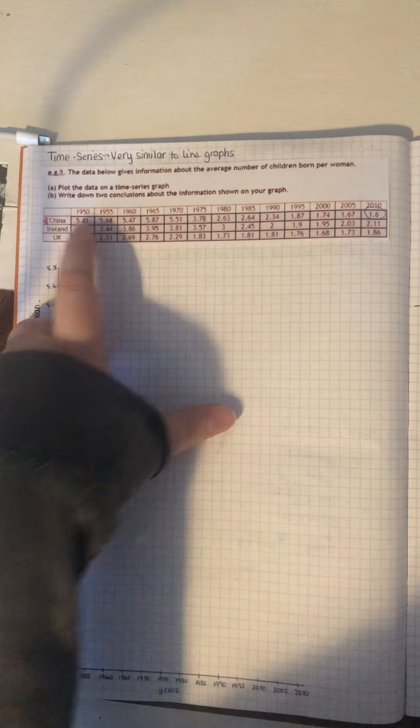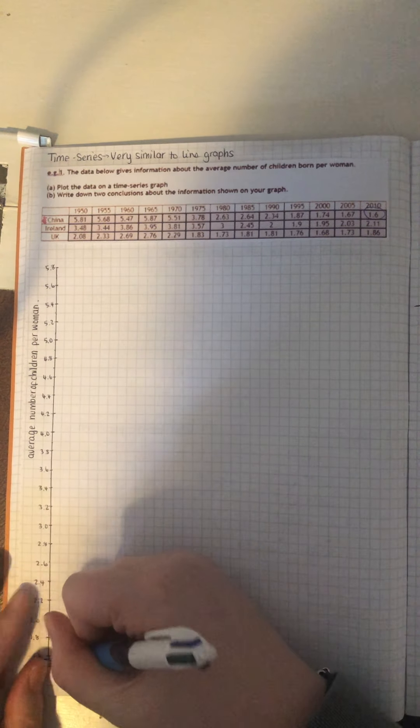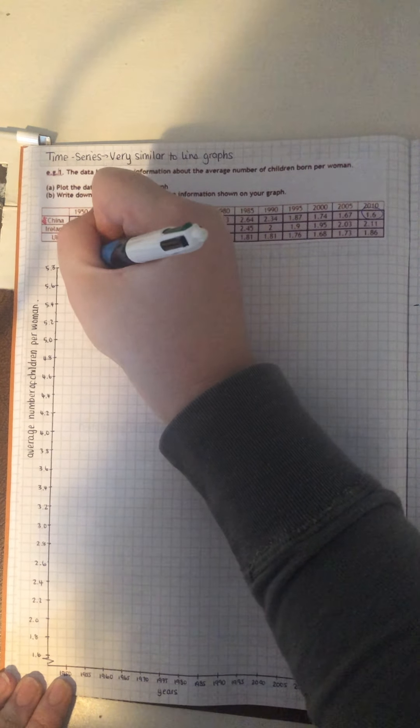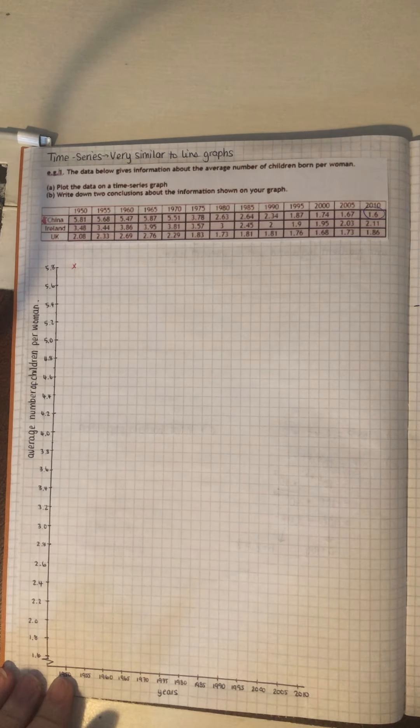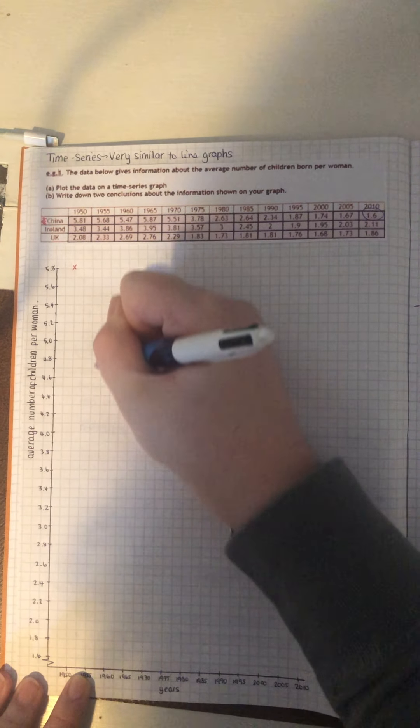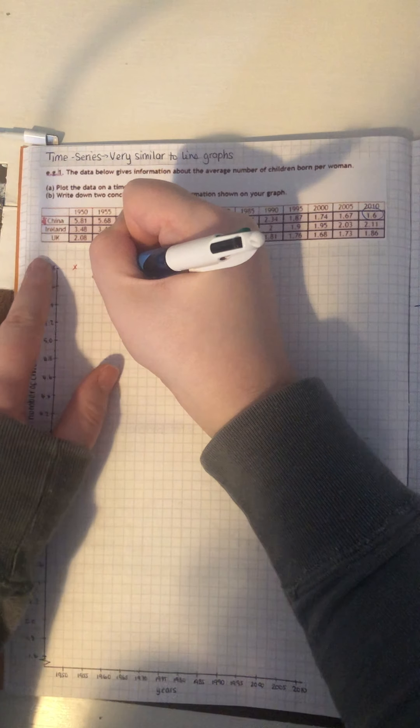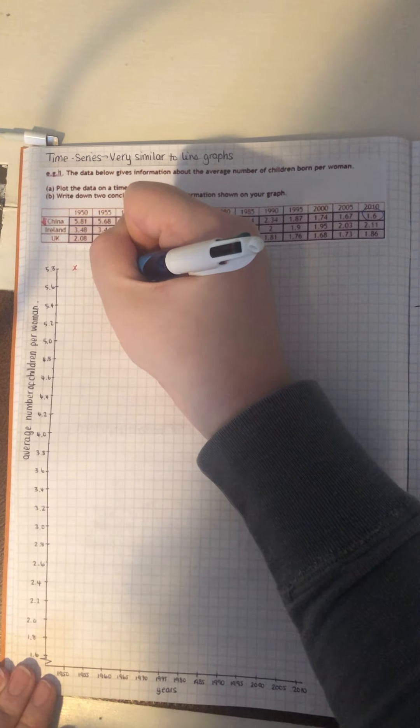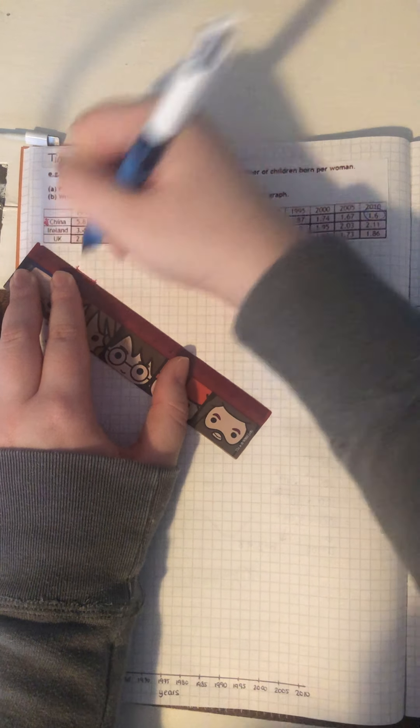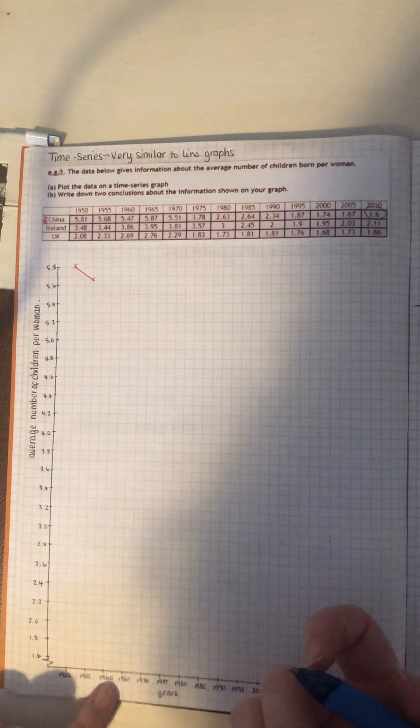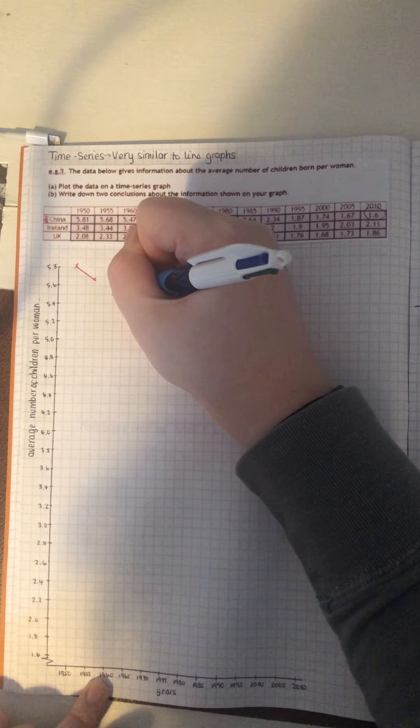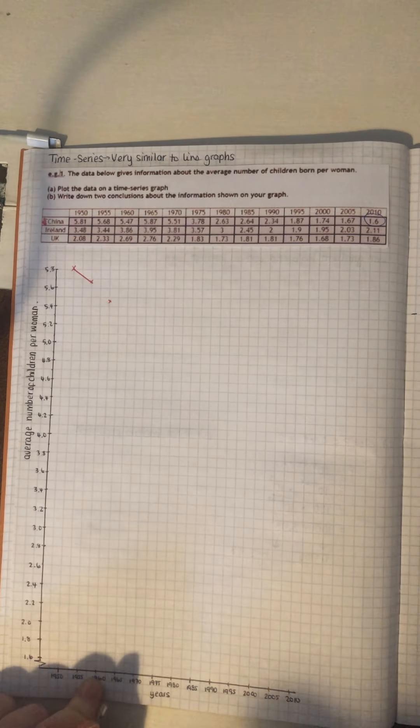So, for 1950, China had 5.81. So, you go from 1950, you go all the way up, following it up to 5.81, which is roughly there. And I just keep going through. So, 1955 is 5.68. So, again, very high. 5.68. Well, halfway between the two, because I've done two squares. That's going to be 5.7. So, just below there. Now, you can just connect them after. If you're worried that you're going to miss one, just do it one by one.